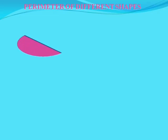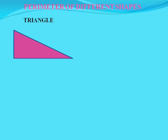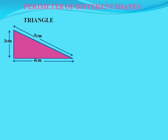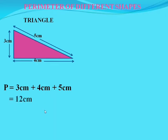Perimeter of different shapes. Let's take a triangle which has sides 3 cm, 4 cm, and 5 cm. We can find out the perimeter by the sum of all the sides: 3 cm + 4 cm + 5 cm, which becomes 12 cm.